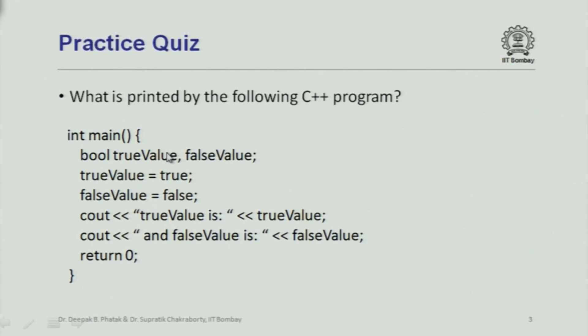So this is an important distinction: if you treat true_value as an integer and add something to it, you might get some other value. But when you try to print true_value, the C++ standard specifies that true will be printed as 1.